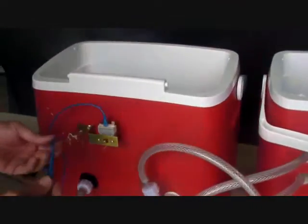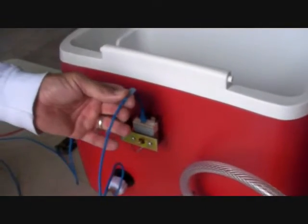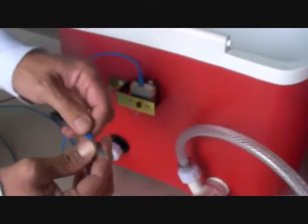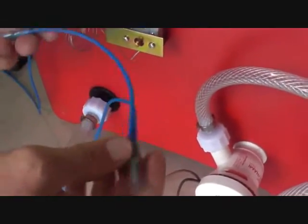At the thermostat, what I've done, you'll notice, is I've taken a short piece of wire, put the female connector on it, and then the wire coming from the switch, I put them together and put a buck connector. Put them both into one side of a buck connector.